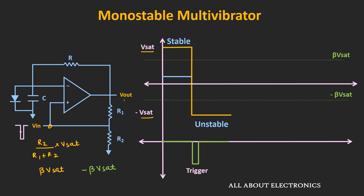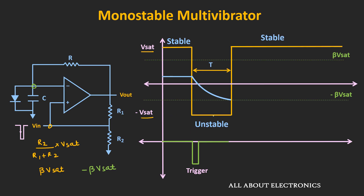As the output is now at negative saturation voltage, the diode becomes reverse biased and the capacitor starts charging towards the negative saturation voltage. Whenever the voltage at the inverting node just goes below −β·Vsat, the output of the op-amp once again becomes positive saturation voltage, because the non-inverting node voltage becomes slightly more than the inverting node voltage. The output switches back from negative to positive saturation voltage, and for this time t only, the output remains in the unstable state. As soon as the output reaches positive saturation voltage, the diode becomes forward biased again and the voltage across the capacitor returns to the forward voltage drop across the diode. This is the basic working principle of the monostable multivibrator.